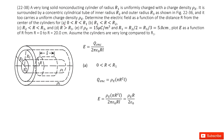First, we find the electric field where r is smaller than R1. If you draw a Gaussian surface inside R1, the enclosed charge is just the charge density times the volume, which is pi R squared times L. Inputting this enclosed charge into the formula, pi cancels, L cancels, and R cancels, so we get the final answer.